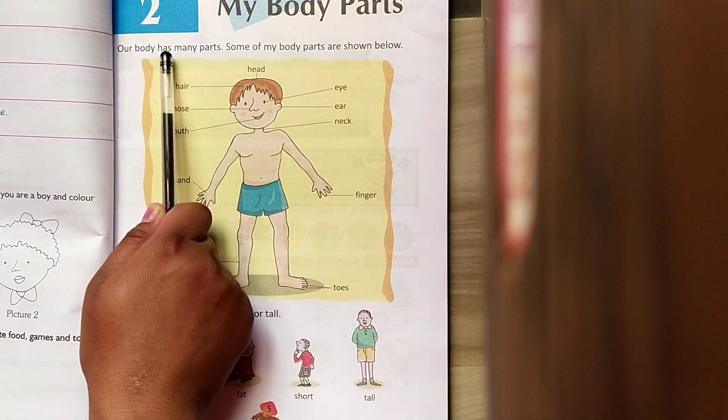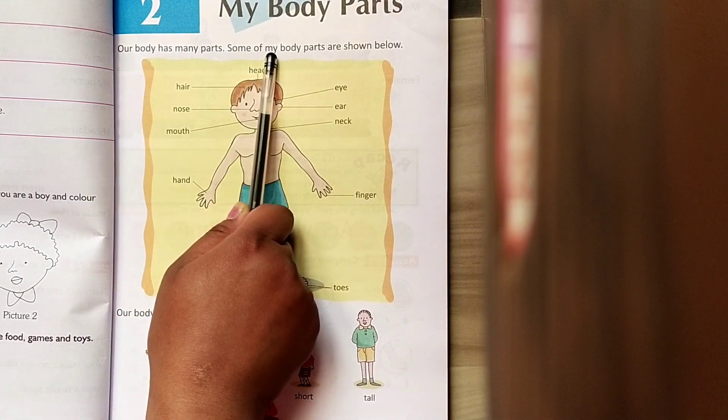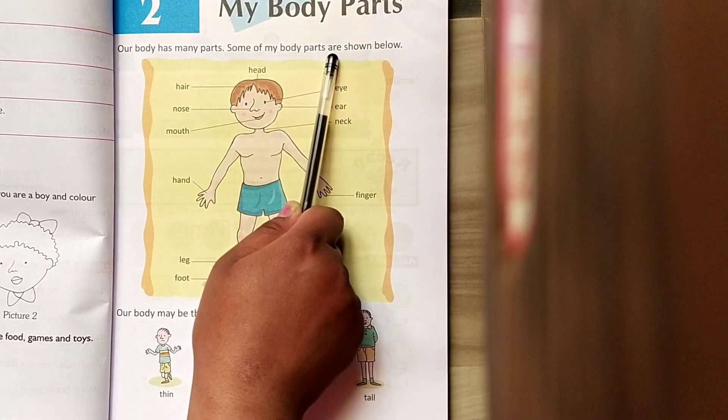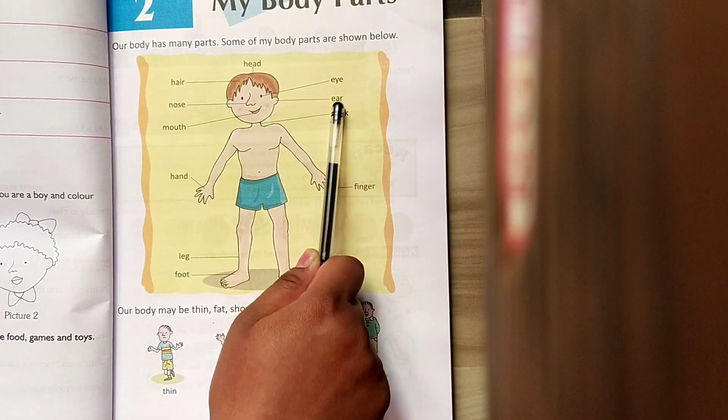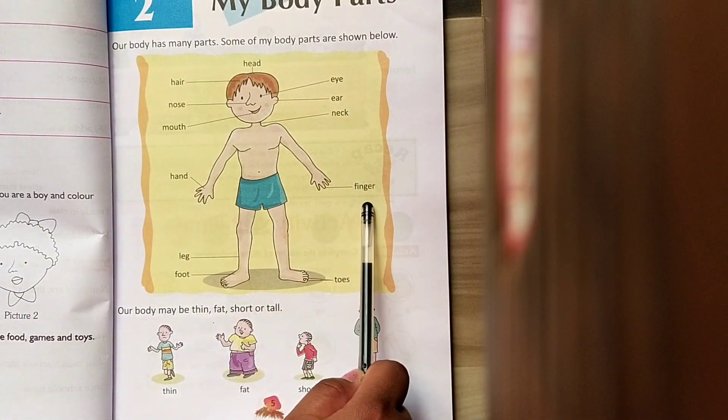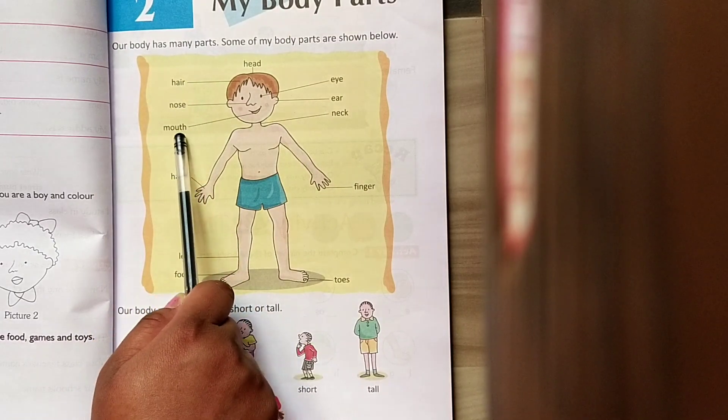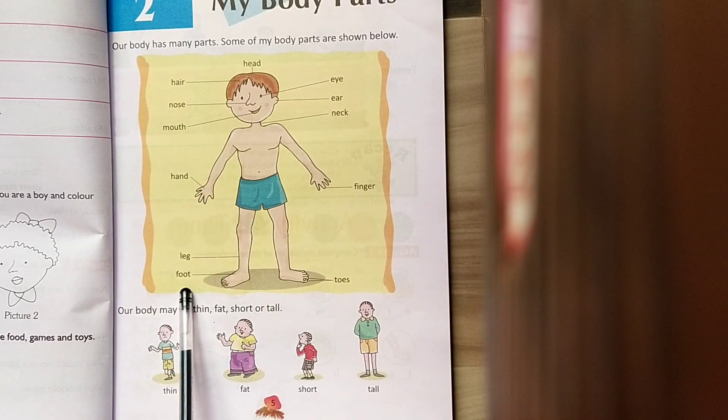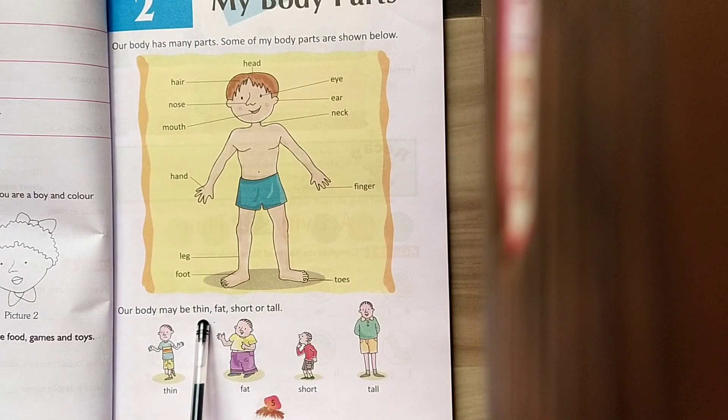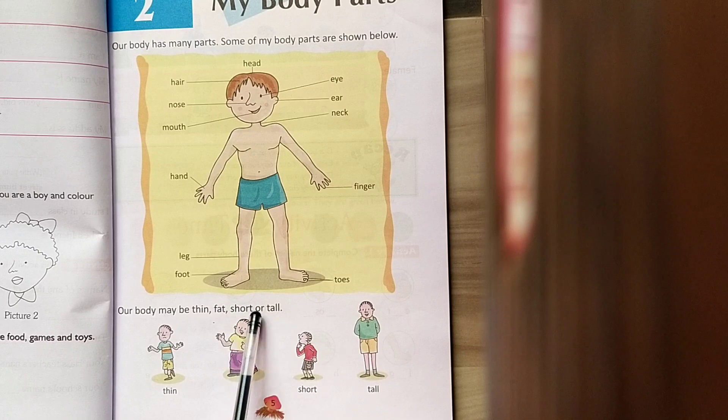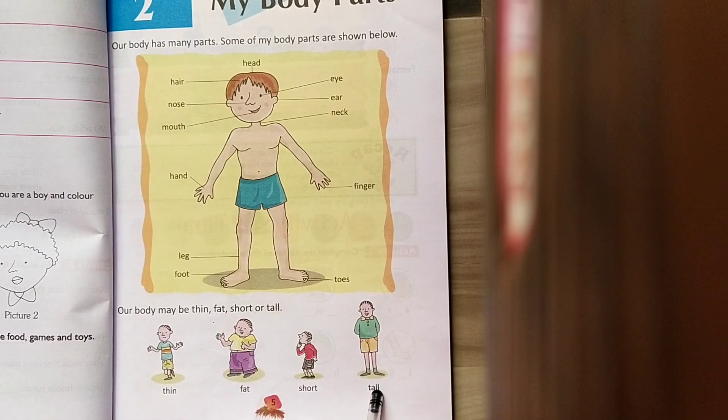Our body has many parts. Some of my body parts are shown below. Head, Eye, Ear, Neck, Finger, Toes, Hair, Nose, Mouth, Hand, Leg, Foot. Our body may be thin, fat, short or tall. Thin, fat, short, tall.